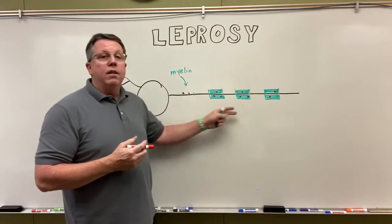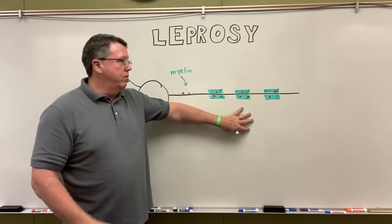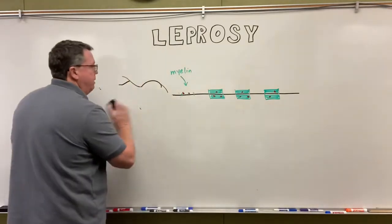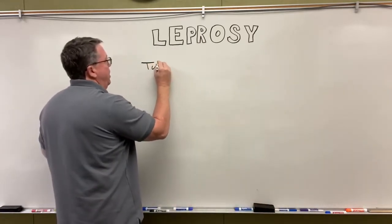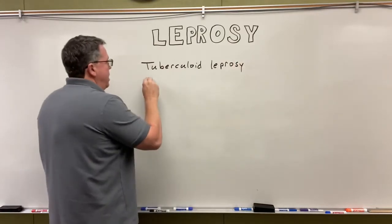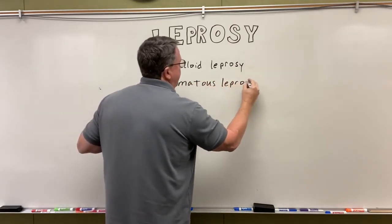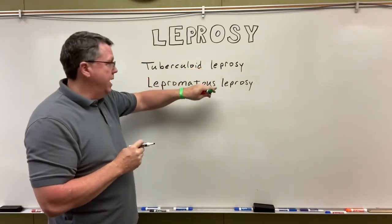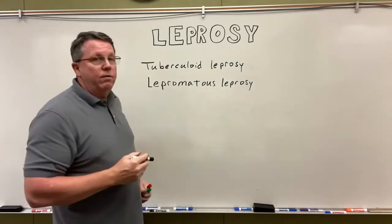When cells are demyelinated they don't work properly anymore, which can lead to a loss of sensation on the skin. That's basically how leprosy works — affecting nerves through demyelination and the skin through macrophages. There are two types of leprosy: tuberculoid leprosy and lepromatous leprosy. Tuberculoid generally affects people with a healthier immune system; without a healthy immune system it progresses to lepromatous.